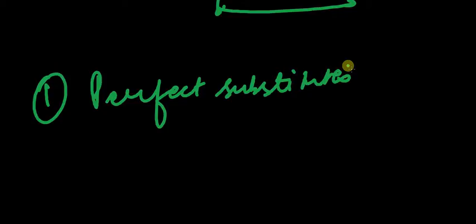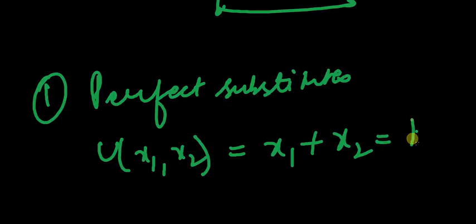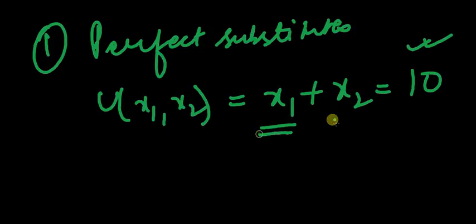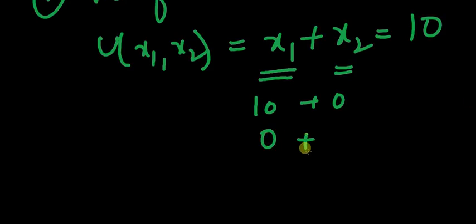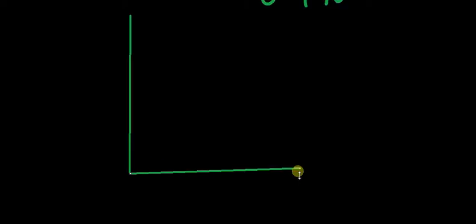The consumer is not concerned about what individual amount he is consuming. The utility function is given by x1 plus x2 equals 10. The total utility should be 10 and it can be achieved by any combination — 10 units of good 1 and 0 units of good 2, or 0 units of good 1 and 10 units of good 2. If I plot this with axes x1 and x2, it looks like a straight line.